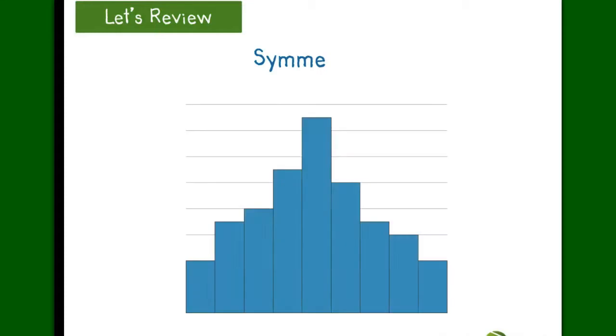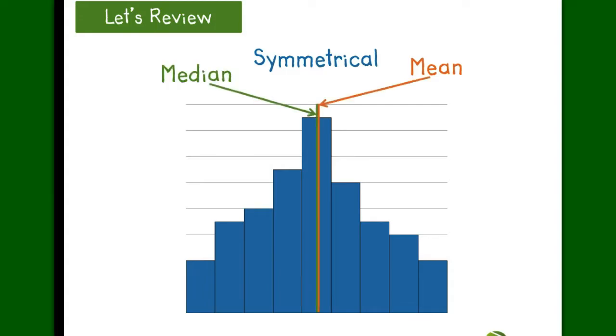When a chart is close to symmetrical, your shape can be folded in half and basically be the same image. Your mean and median will often be very close to each other and your spread will depend on the data points.